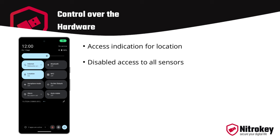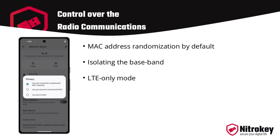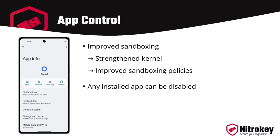Control over hardware is extended: the location data access indicator shows when an app requests location data. The ability to disable an app's access to all sensors has been extended — not only existing Android permissions such as camera, microphone, body sensors, and activity detection, but also those not covered by Android permissions, such as accelerometer, gyroscope, compass, barometer, and thermometer. MAC address randomization per connection is enabled by default, and the DHCP client state is cleared when a connection is re-established. Protection against over-the-air exploits by isolating the baseband radio processor via IOMMU has been provided, with an optional LTE-only mode to significantly reduce the mobile attack surface.